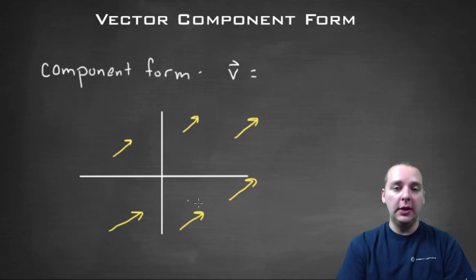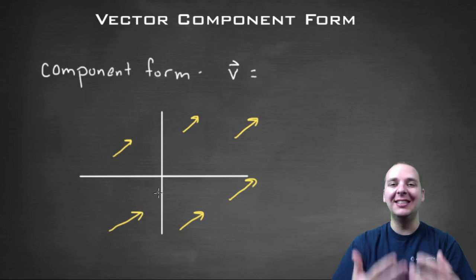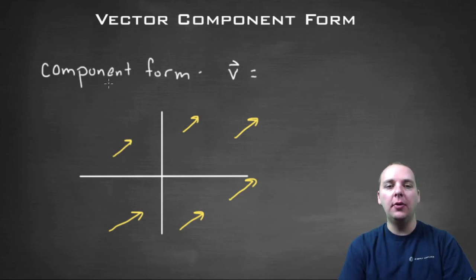So what we do in light of that is we actually just for consistency sake wind up drawing all these guys originating from the origin. It just makes it easier, it makes it more consistent, and that's what component form does.